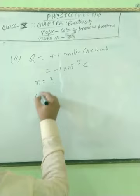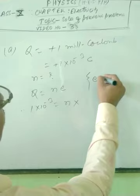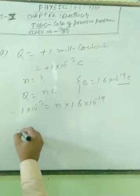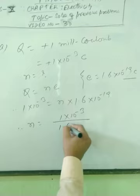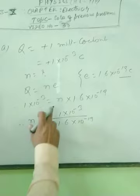As you know the formula Q equals NE, therefore 1 into 10 to the power minus 3 is equal to N into E. The value of E is 1.6 into 10 to the power minus 19. Now you have to calculate 1 into 10 to the power minus 3 by 1.6 into 10 to the power minus 19.